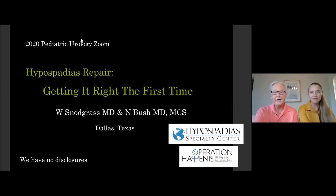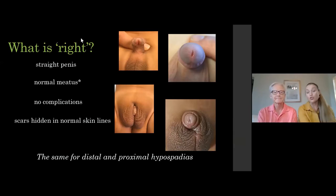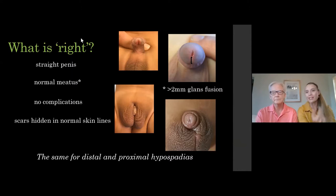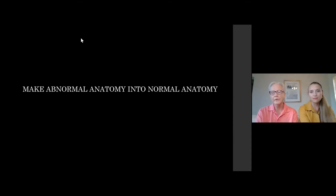Dr. Bush has her master's degree, and one of the things she always tells everyone is you have to define your outcome. So when we say get it right the first time, what is right? What we mean is a straight penis with a meatus at the tip of the glans, no urinary channel complications, and scars hidden in the natural line — the circumcision line or foreskin reconstruction, along the median raphae. This same outcome applies for both distal and proximal hypospadias. Every child with hypospadias has abnormal anatomy, and we're going to make it into normal anatomy.